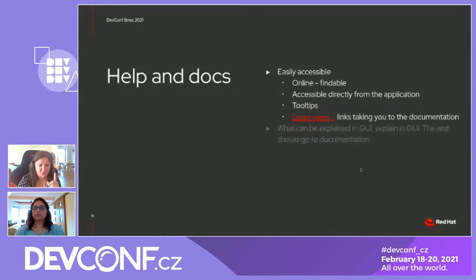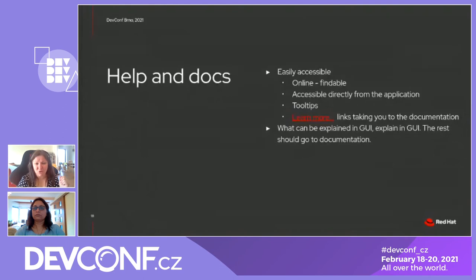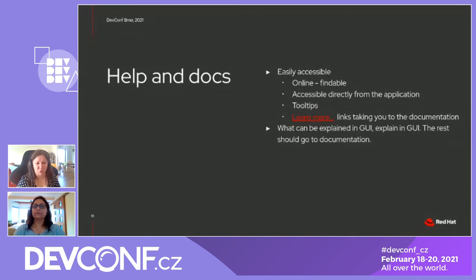Learn more links should take you directly to the documentation. An important note: what can be explained in the graphical user interface should be explained there — don't rely on documentation. A GUI should be designed so that simple concepts are understandable at first sight. However, especially if the topic is complex — and almost everything is complex in the Linux server world: networking, storage, clusters, containers, development tools — it's important to write and offer high-quality documentation that is accessible to everyone and visible at the right places in your product.